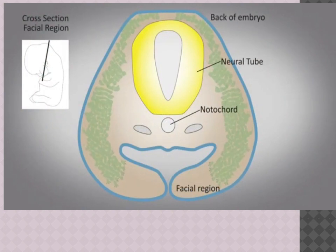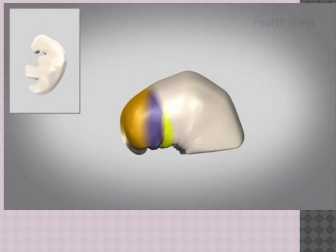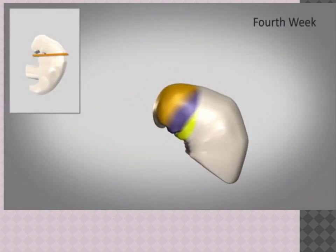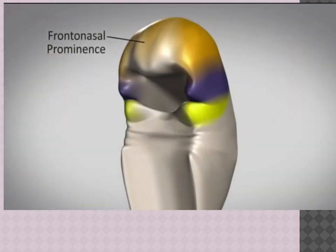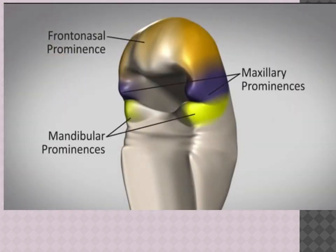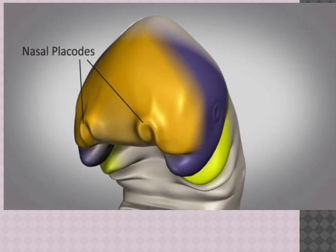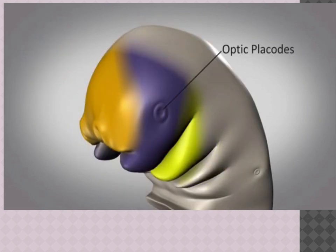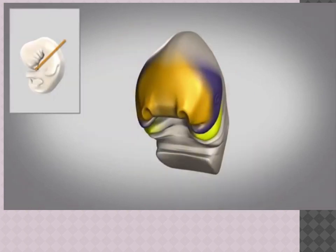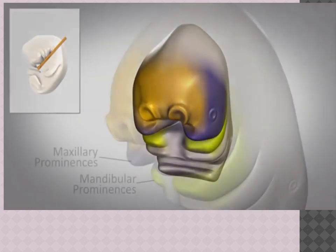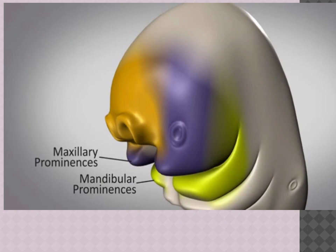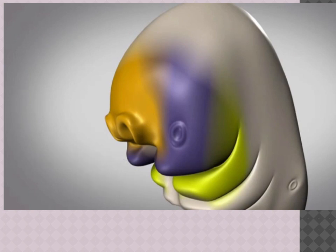Soon after CNCCs reach their final destination, the facial structures begin to take shape externally. By the fourth week, the embryo is characterized by five facial swellings: the frontonasal prominence and the paired maxillary and mandibular prominences. In a five-week-old embryo, the nasal placodes and optic placodes form. The maxillary and mandibular prominences enlarge and grow forward and towards the middle, eventually giving rise to the upper and lower jaws respectively.